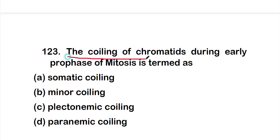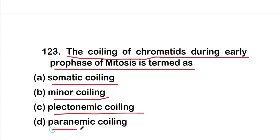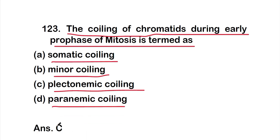Question 123: The coiling of chromatids during early prophase of mitosis is termed as option A - somatic coiling, option B - minor coiling, option C - plectonemic coiling, or option D - paranemic coiling. The right answer is option C, plectonemic coiling.